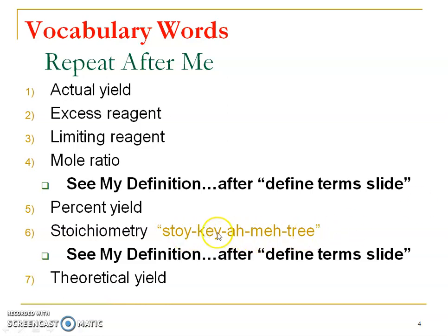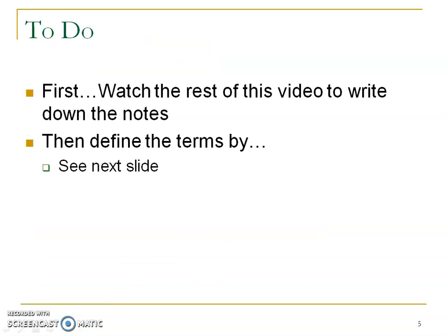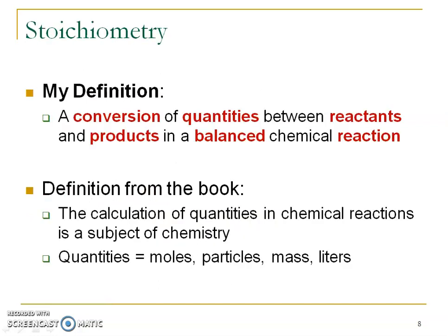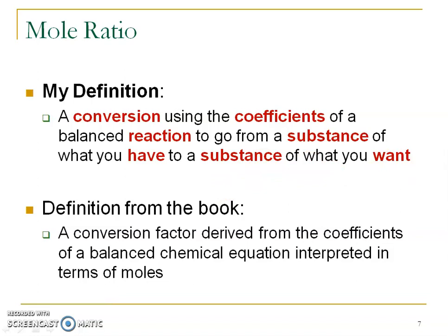I also gave you the syllabification for stoichiometry, because that's a pretty big word with lots of syllables. As usual, you're going to watch the rest of this video to write in your notes. You're going to define those terms by looking in the chapter or in the glossary at the back of the book, because of that matching vocab quiz coming up. So pause the video and make sure to write in the mole ratio definition. It might not make too much sense now, but hopefully you'll understand in the next video notes about how we're going to use this mole ratio to go from one substance to another.